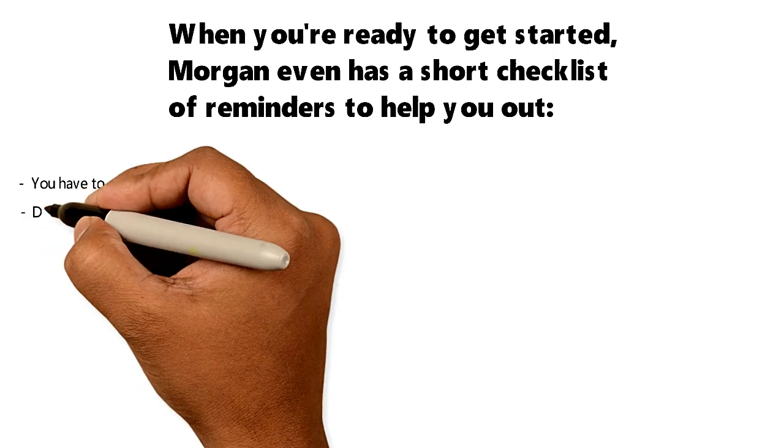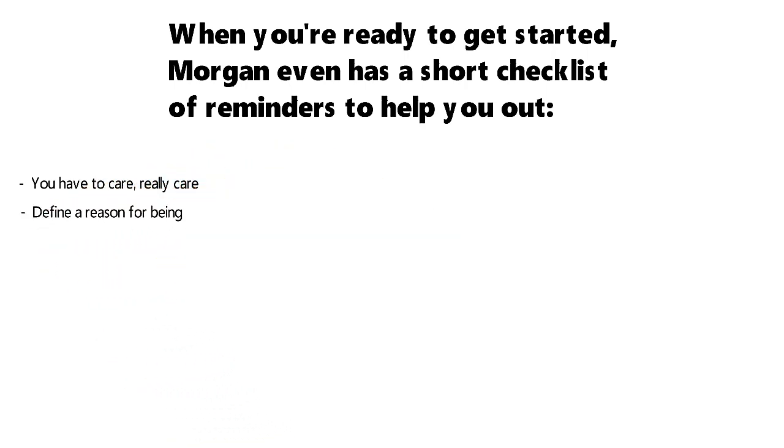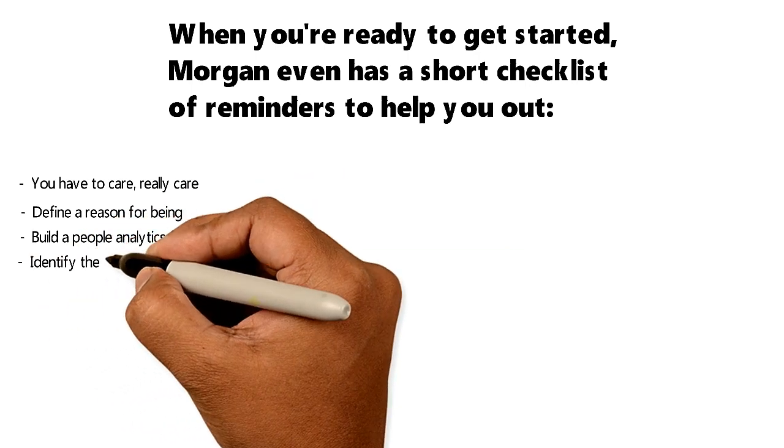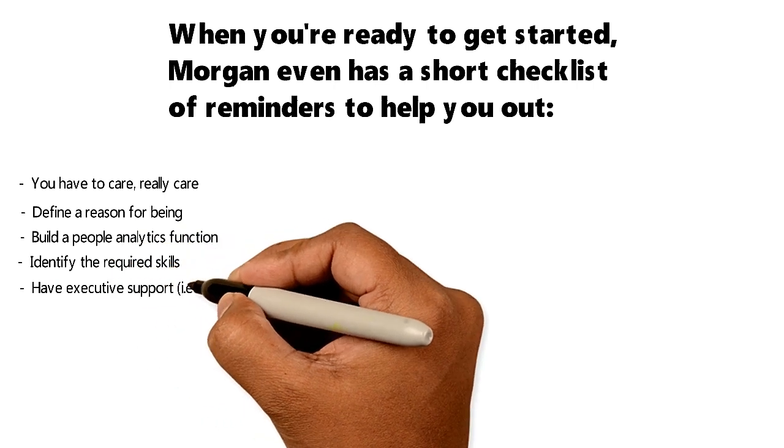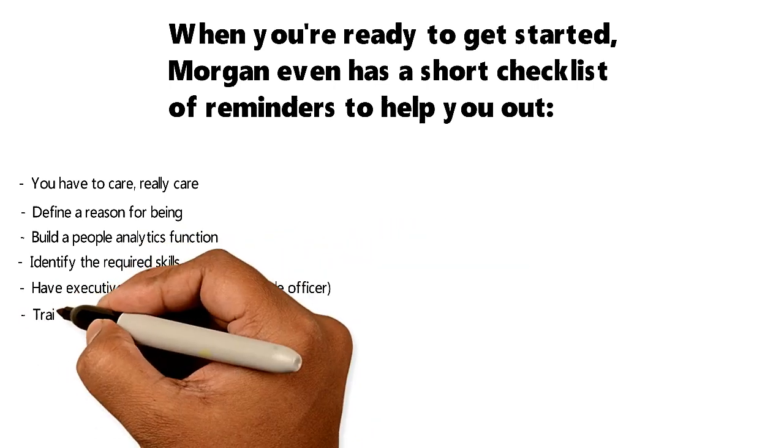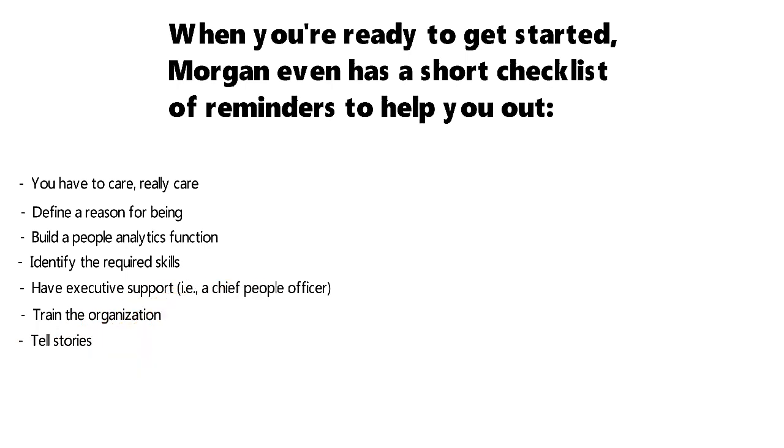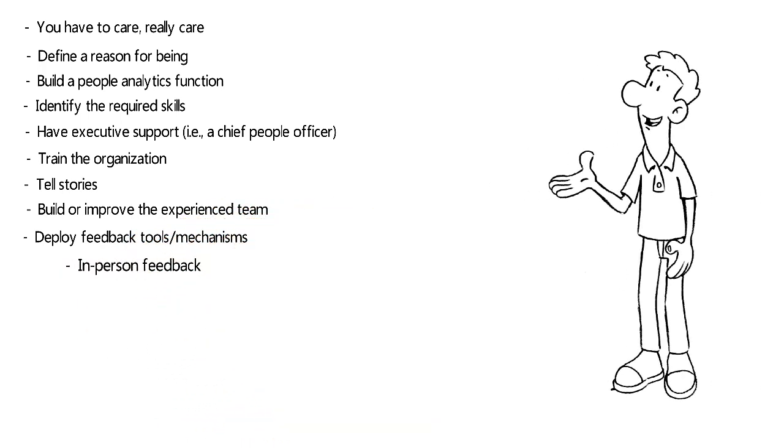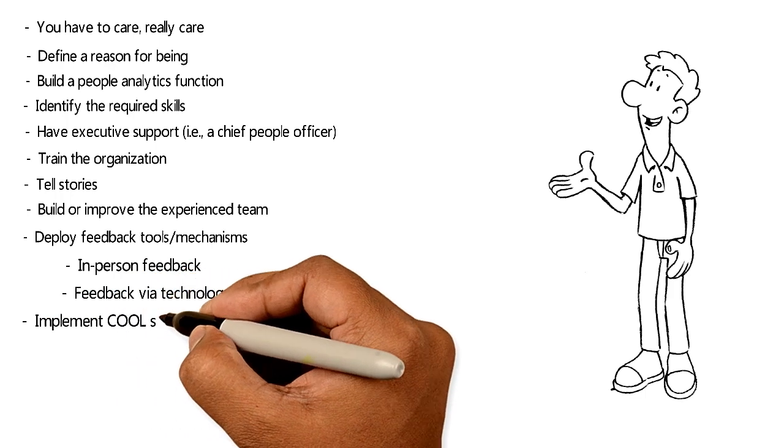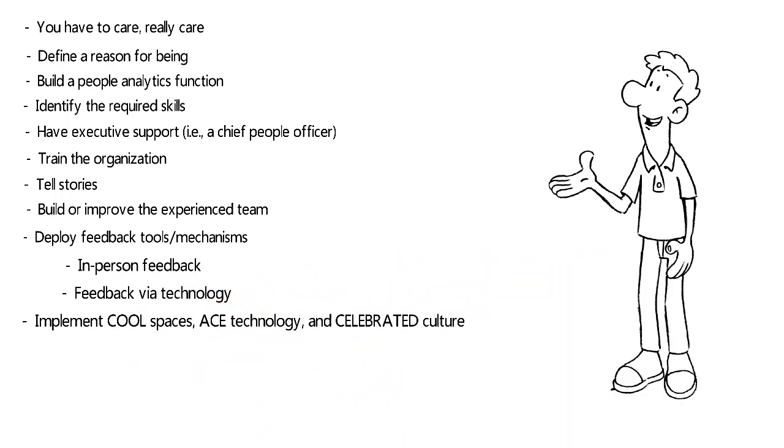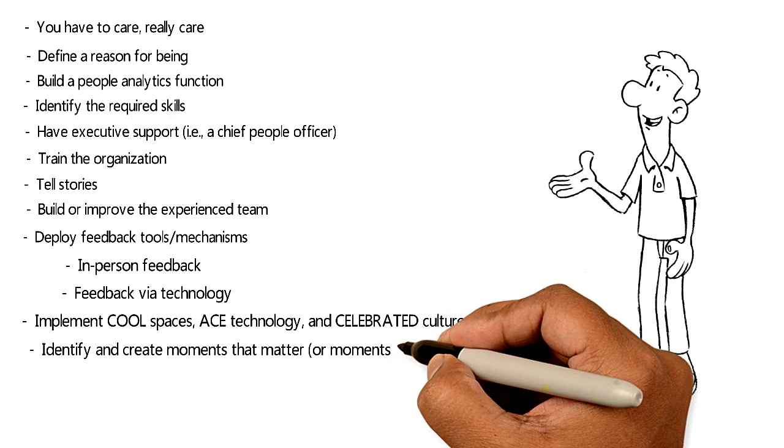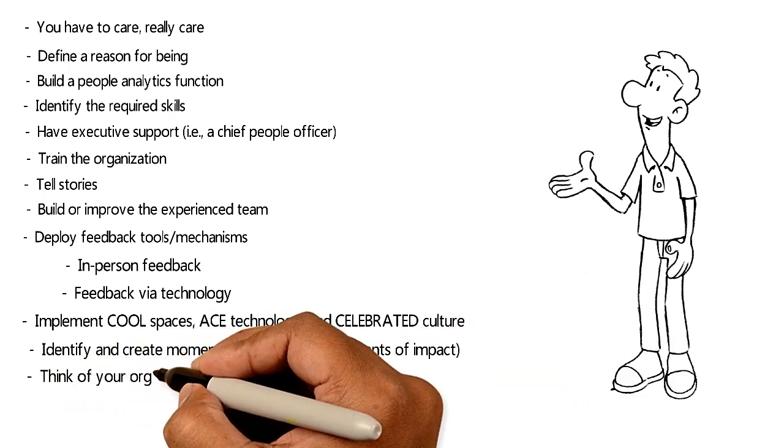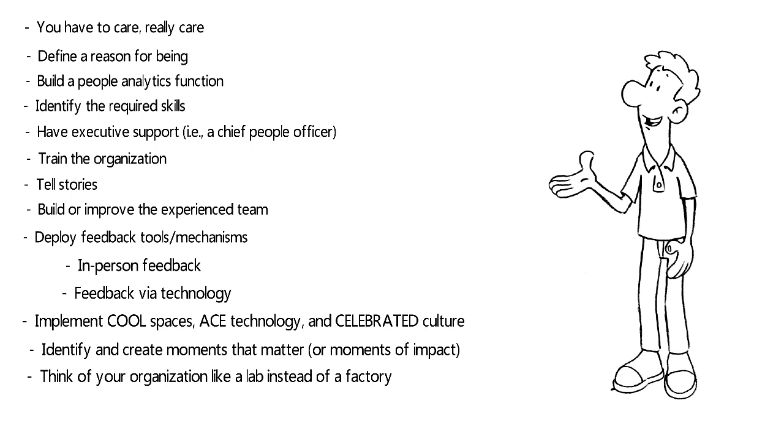You have to care, really care. Define a reason for being. Build a people analytics function. Identify the required skills. Have executive support, i.e., a chief people officer. Train the organization. Tell stories. Build or improve the experience team. Deploy feedback tools or mechanisms: in-person feedback and feedback via technology. Implement cool spaces, ACE technology, and celebrated culture. Identify and create moments that matter or moments of impact. Think of your organization like a lab instead of a factory.